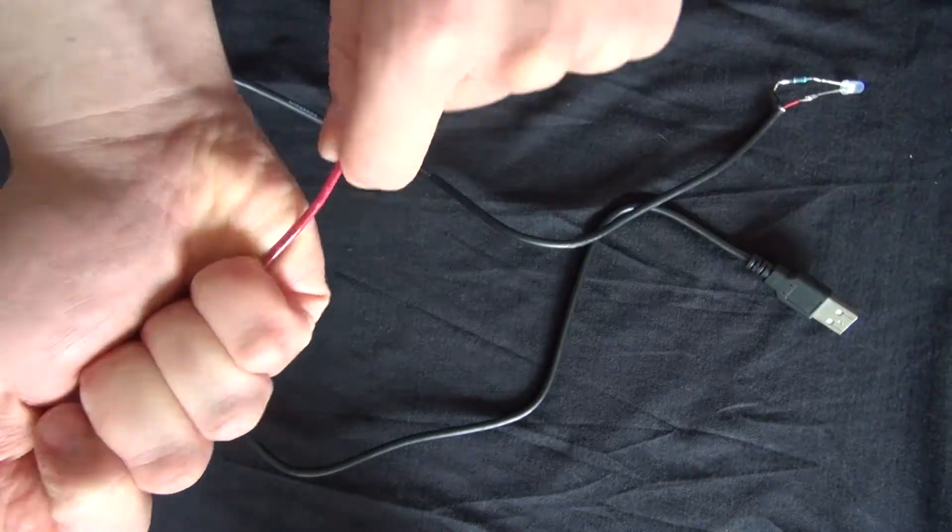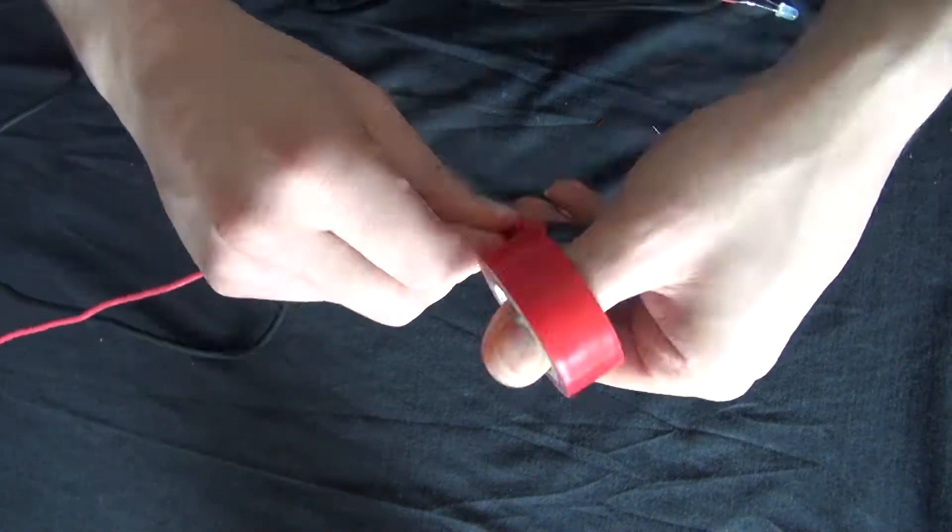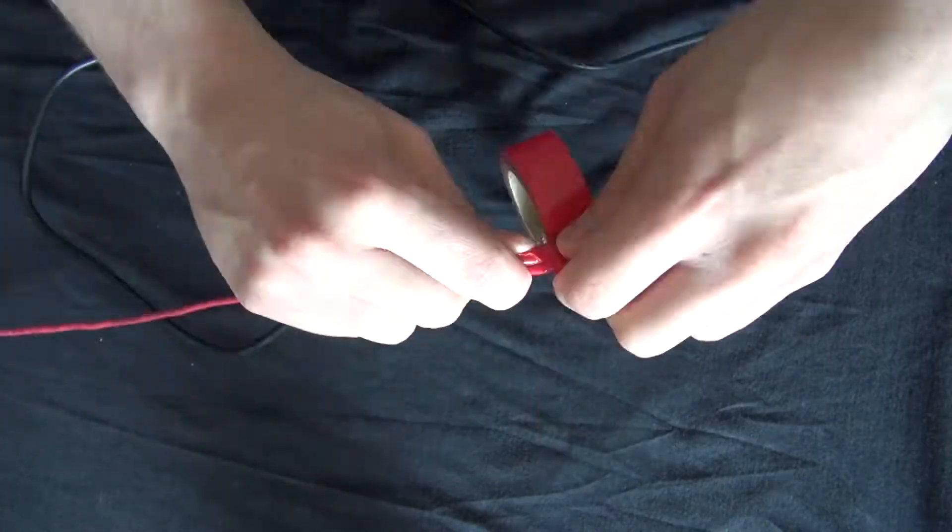Now take your electrical wire, straighten it out as much as you can, and start wrapping the electrical tape all the way around.